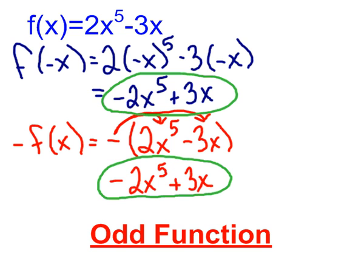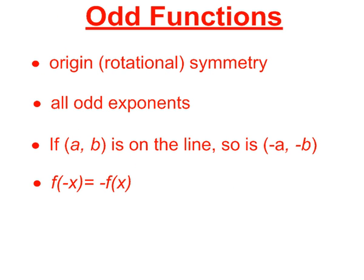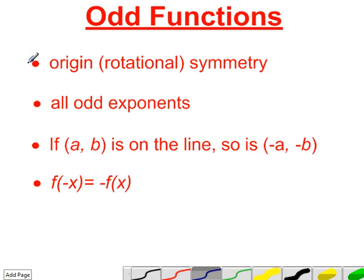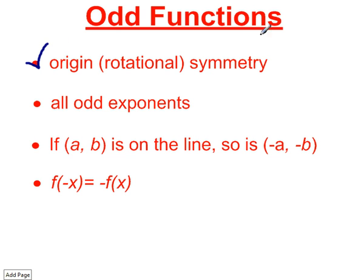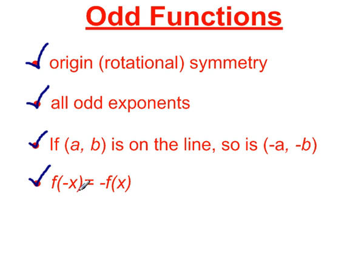So this function is odd. In conclusion, there are 4 ways that we can test a function to see if it's odd: we can look at its graph and see if it has rotational symmetry around the point (0, 0); we can look at its equation and make sure all the exponents on the variables are odd; we could choose a point on the line and test to make sure the negatives of the x and y coordinates are also on the line; and finally, we can substitute negative x into the function and confirm that it equals the negative of the entire function.